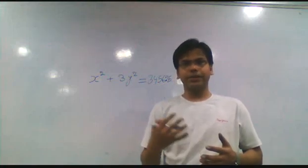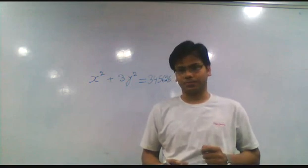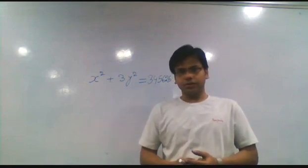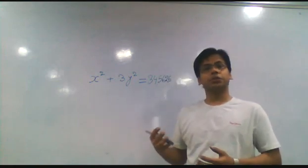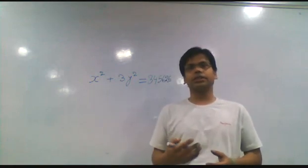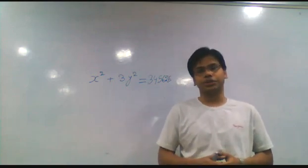Hi, today we will try to see a question of algebra in terms of number system. We have an equation x² + 3y² = 345626. At first glance, it seems a question of algebra, but believe me, it is a question of number system.